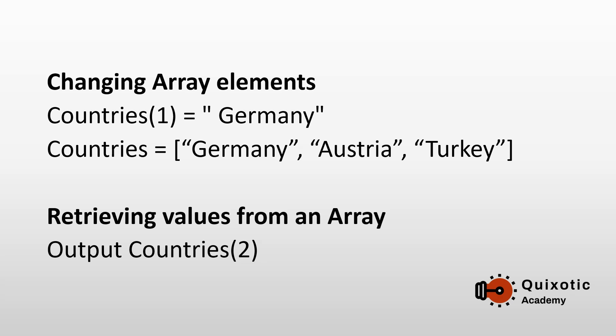In our countries array, if we wanted to change the first element USA, we would take index number 1 and replace it — say, with Germany. So now our array would read Germany, Austria, and Turkey. Similarly, values are retrieved from an element by referring to its position. If we wanted to extract the second country, we would use index number 2, which would display Austria.